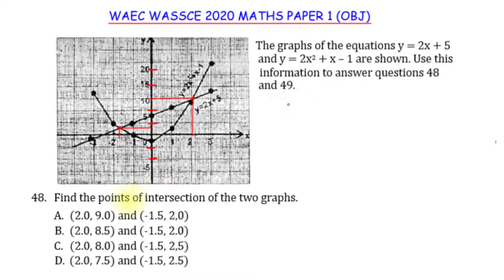What I suggest we do is solve algebraically. We are asked to find the point of intersection of the two graphs. These intersection points are where the two graphs are equal, so I can set 2x + 5 = 2x² + x - 1 and solve for x, then substitute back to find y.